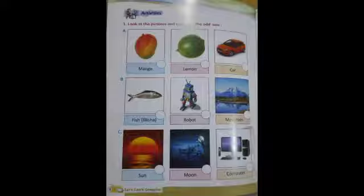Now you cross the odd one out. Next question number C: the sun is a natural thing. The sun gives us heat and light. Moon is also a natural thing. Computer is not a natural thing. Computer is a machine. We can do our task in computer. So now you cross the odd one out.